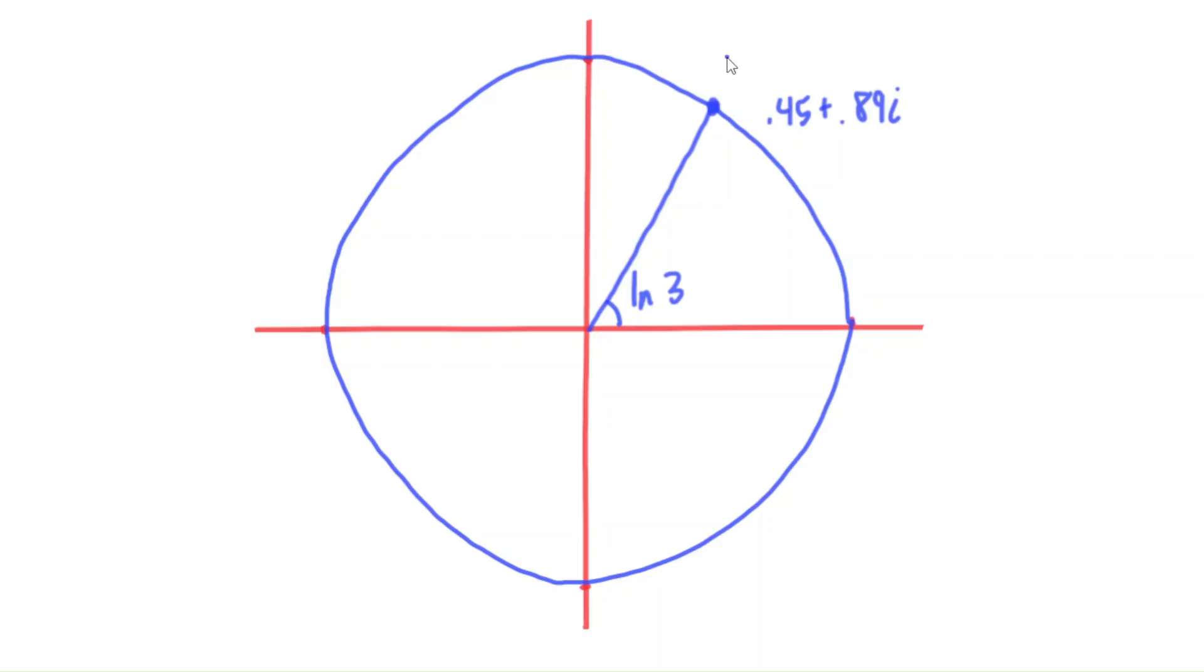Or, in other words, that's the point three to the i. So this point in the complex plane that's on the unit circle, three to the i, is the point that's on the unit circle that has this angle of natural log of three with respect to the positive real axis here. So that's geometrically where three to the i power is.